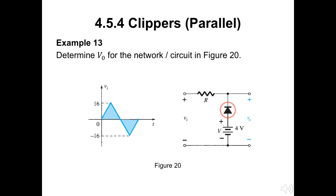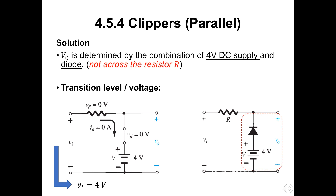Now we will discuss Example 13. Determine VO for the network or circuit in figure 20. The input VI max is 16V, alternating in each half of the large period T. The diode is noted with a red circle. From figure 20, we need to determine VO by combining DC 4 volts with the diode voltage. Firstly, we need to be clear about the ON and OFF state of the diode. Starting with the ON state, current ID is 0 ampere flowing around the KVL, which makes VR equal to 0 volt. Based on the KVL, VI is 4 volts, which reflects to the transition level discussed last week.